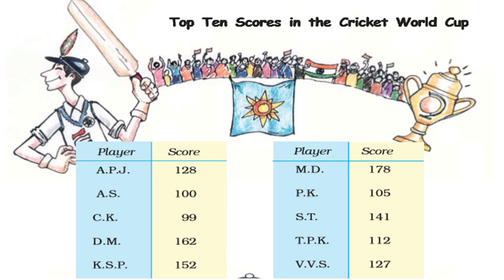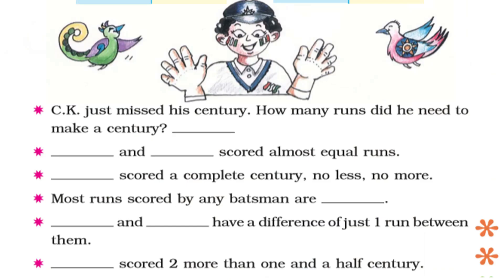Top 10 scores in the Cricket World Cup — fill in the blanks. CK just missed his century and needed 1 more run. Dias scored a complete century — no less, no more — so AS equals 100. The most runs scored by any batsman is Dias with 178 runs. AS and CK have a difference of just 1 run. Dias scored two more than one and a half century; the answer is KSP.